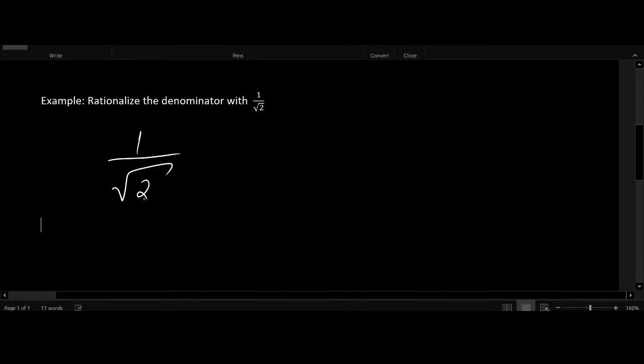And one of the key ways to rewrite a fraction is to multiply the numerator and denominator by the same thing. Do you have any ideas? What could we multiply to the numerator and denominator that would eliminate square root in the denominator?